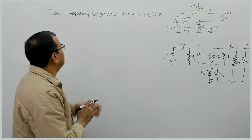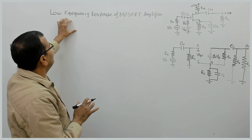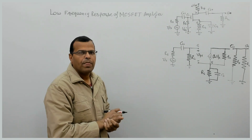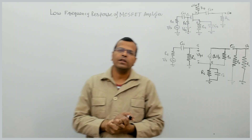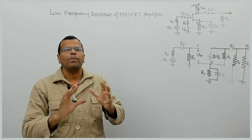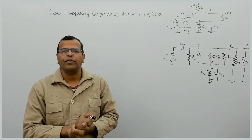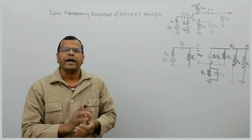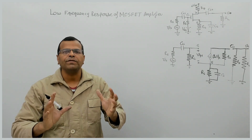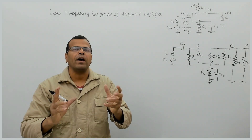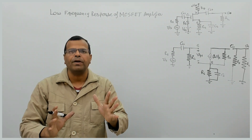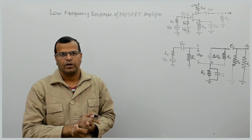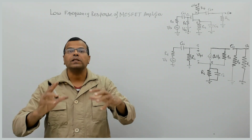Now we will talk about the low frequency response of MOSFET amplifiers. If you have seen my previous video on low frequency response of BJT amplifiers, remember: at low frequencies, a MOSFET amplifier, just like a BJT amplifier, behaves like a high pass RC circuit.